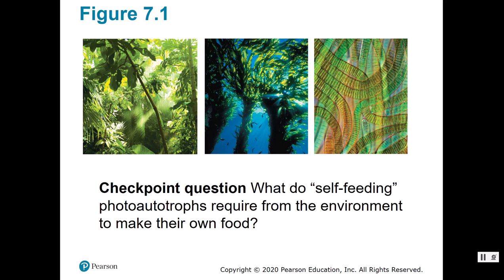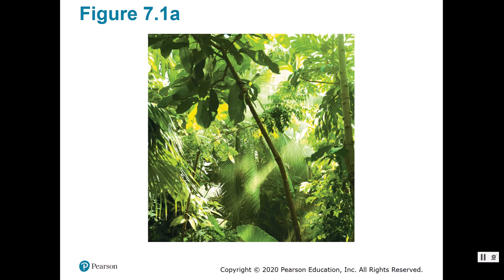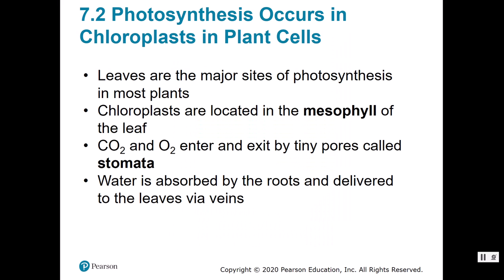You see three pictures here: a tropical rainforest, kelp in the ocean, and cyanobacteria, which is a photosynthetic type of bacteria. Now, what does a self-feeding photoautotroph require from their environment to make their food? They have to have the sun, they need water, and they have to have carbon dioxide. Those are the things required in order to do photosynthesis.